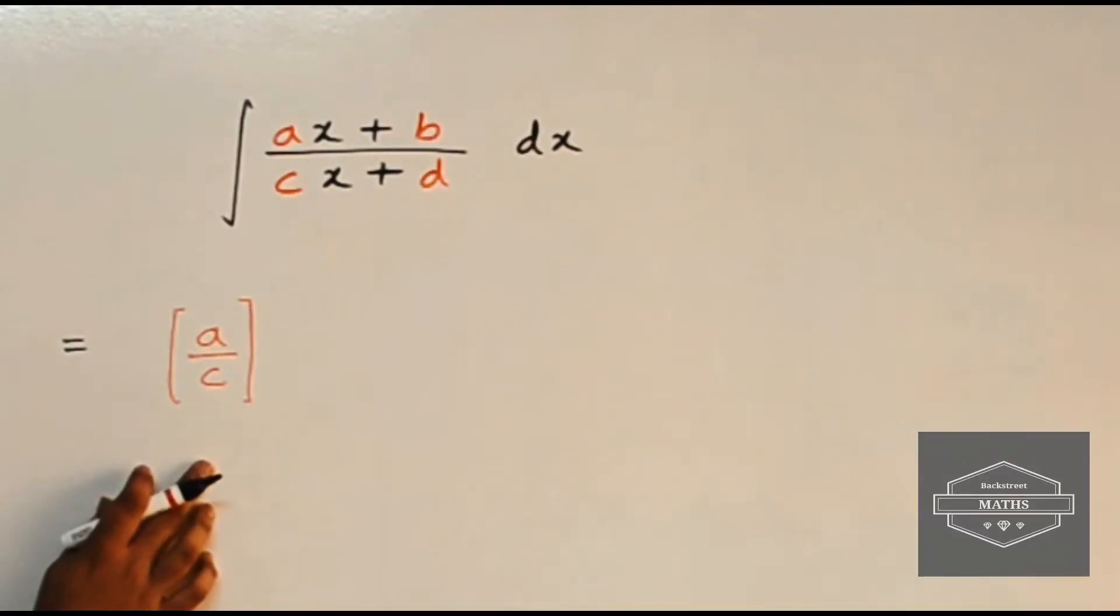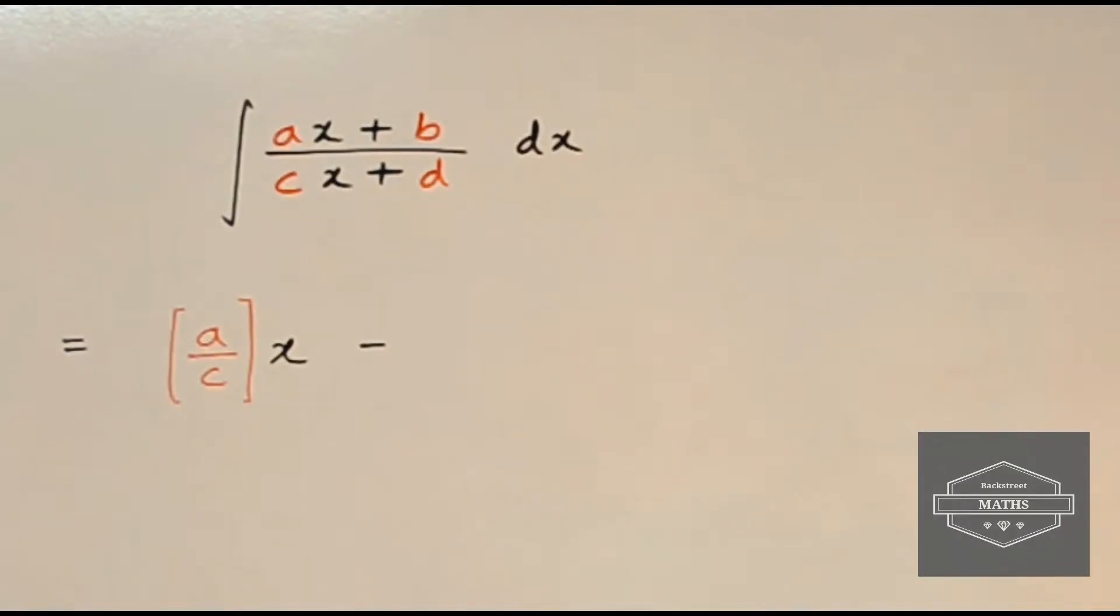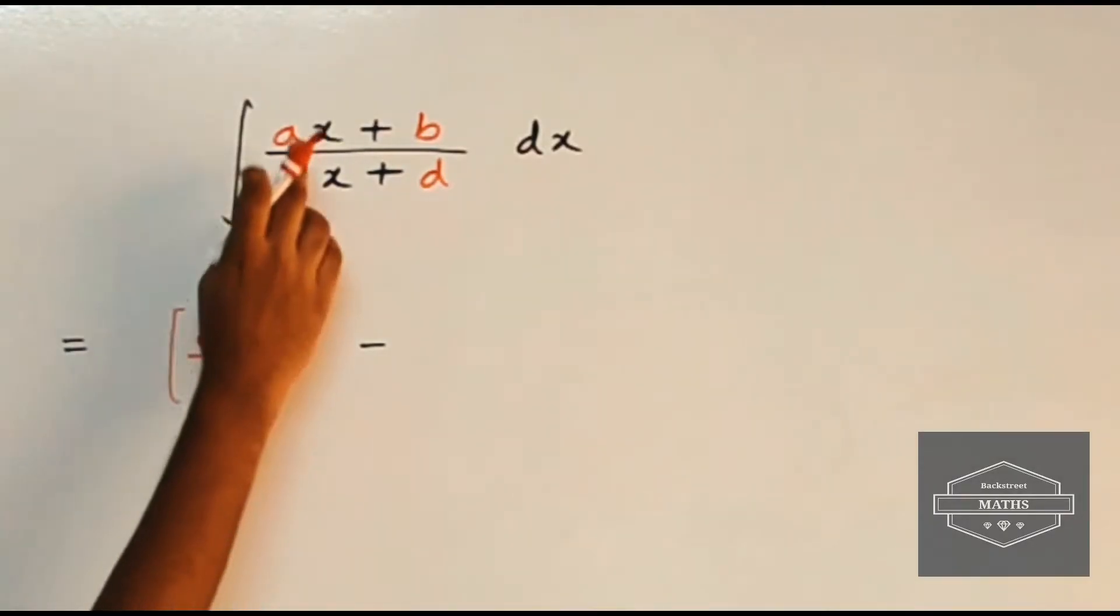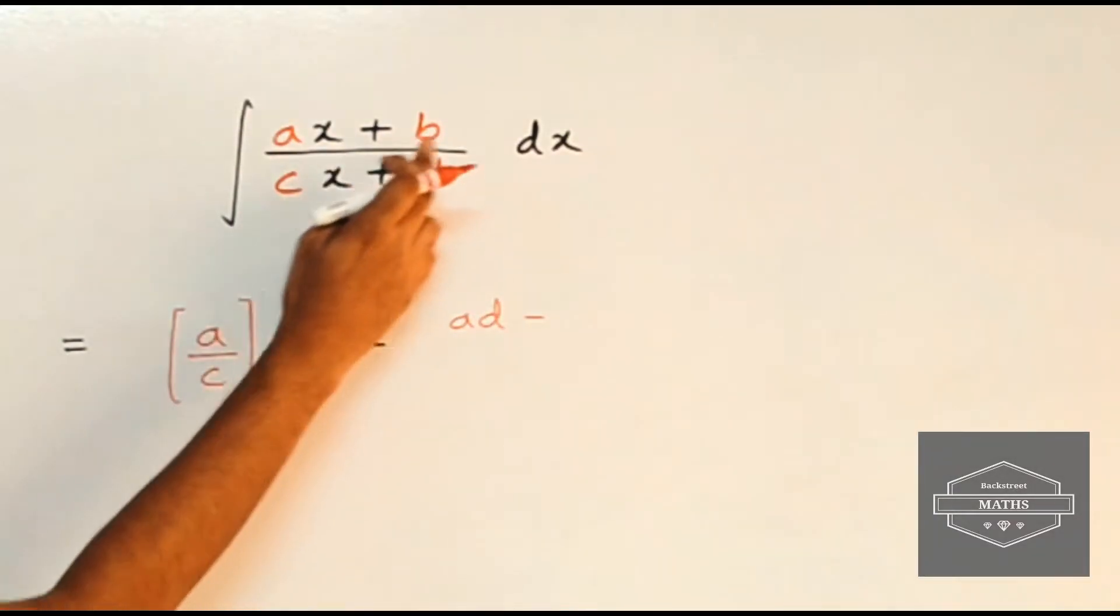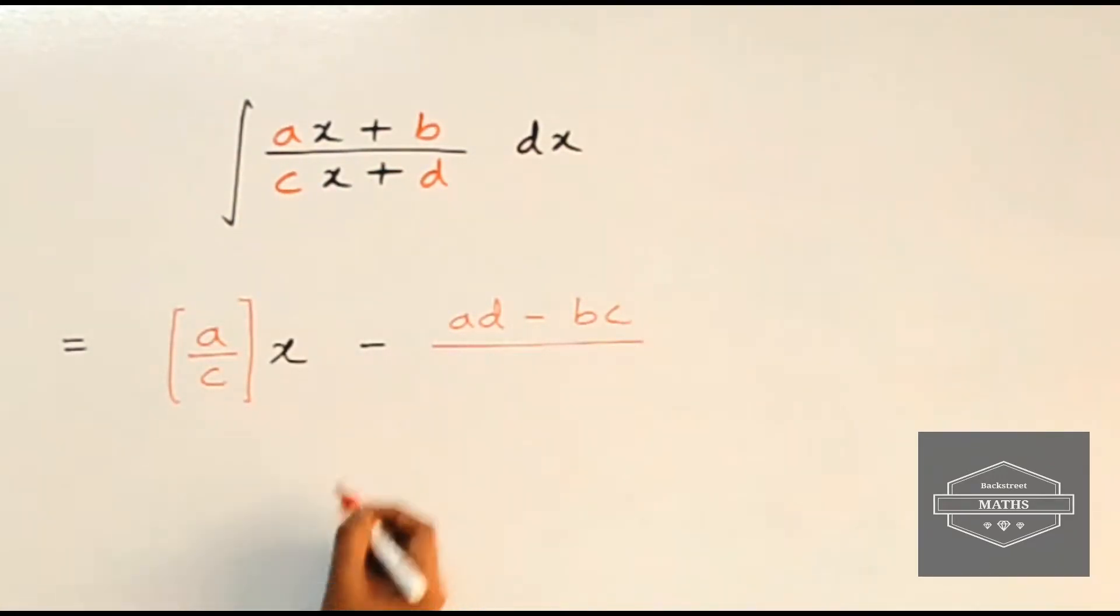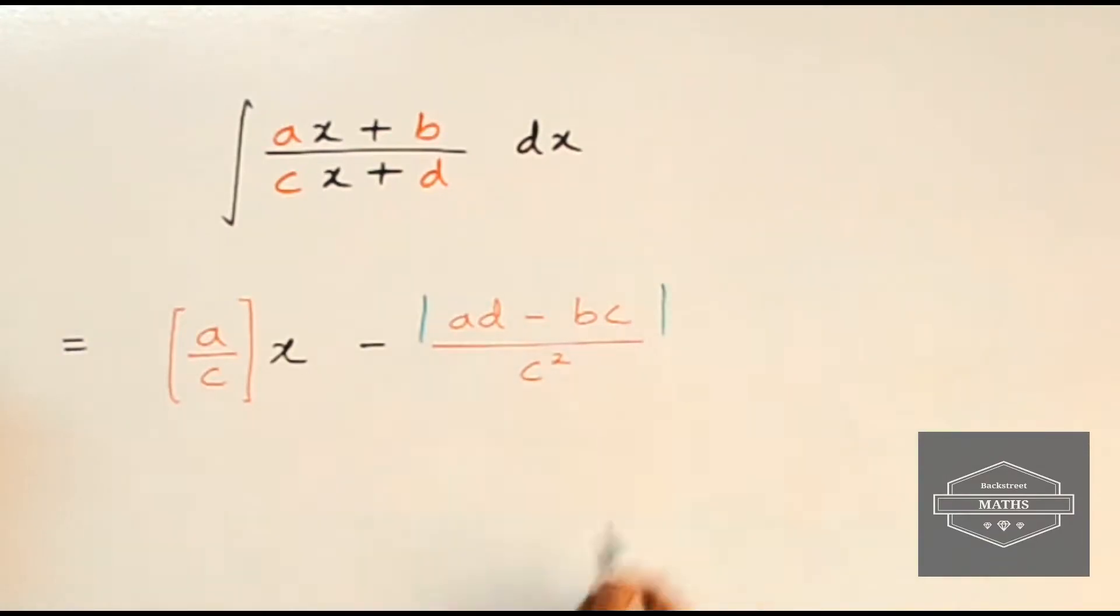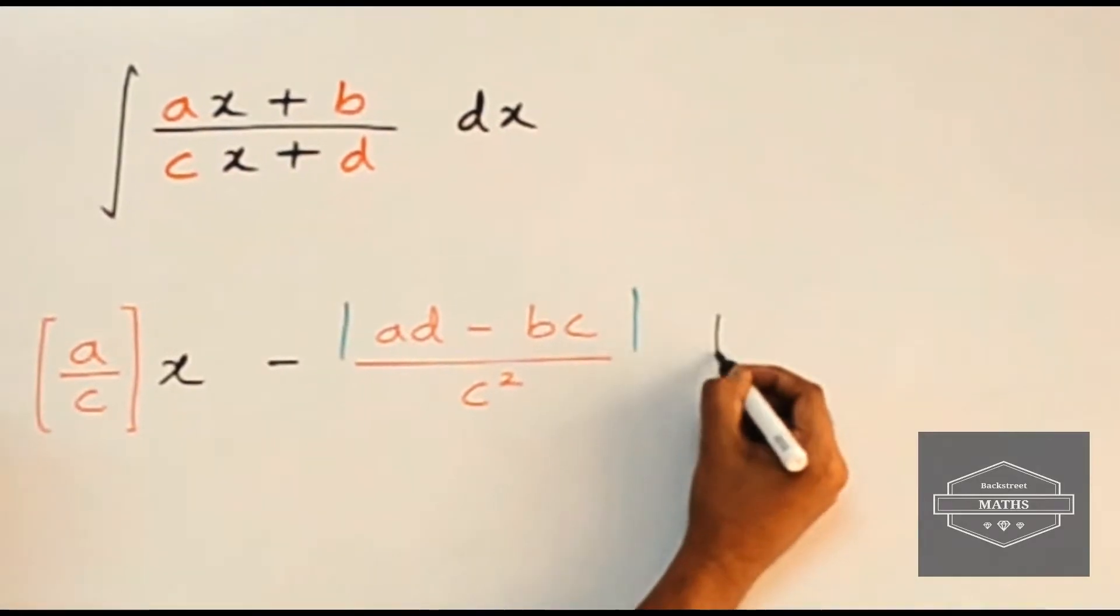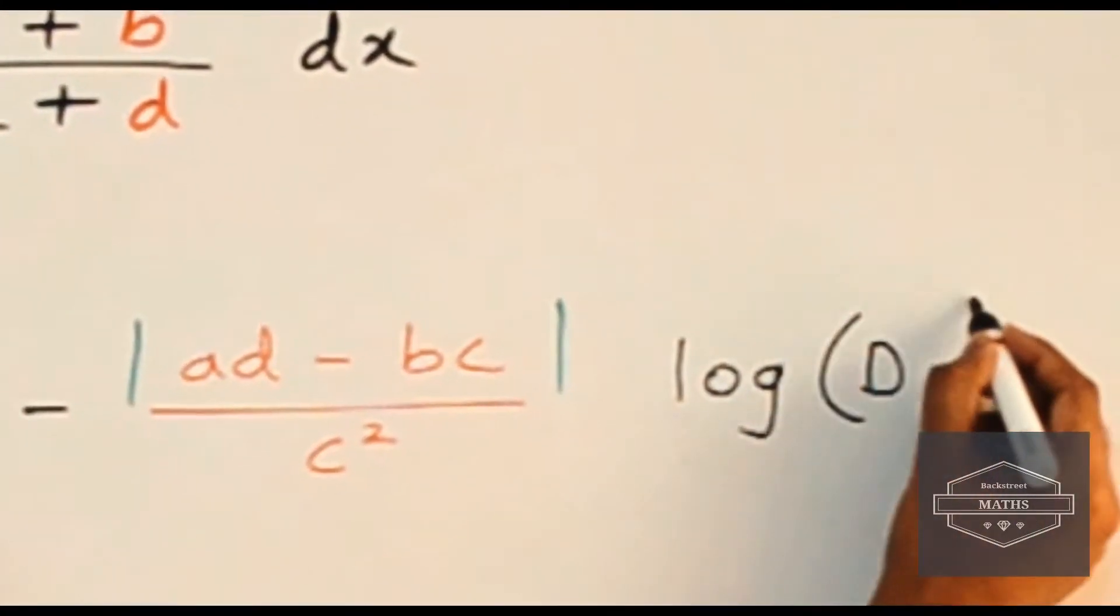And we multiply our first term with x minus. In the second term we have to write a into d, so here I got ad minus b into c. So here we write bc upon c square, okay c square. And here we have to put a mod sign for this term ad minus bc. And here, with the second term, we have to multiply log of denominator, so we have to multiply log of denominator.